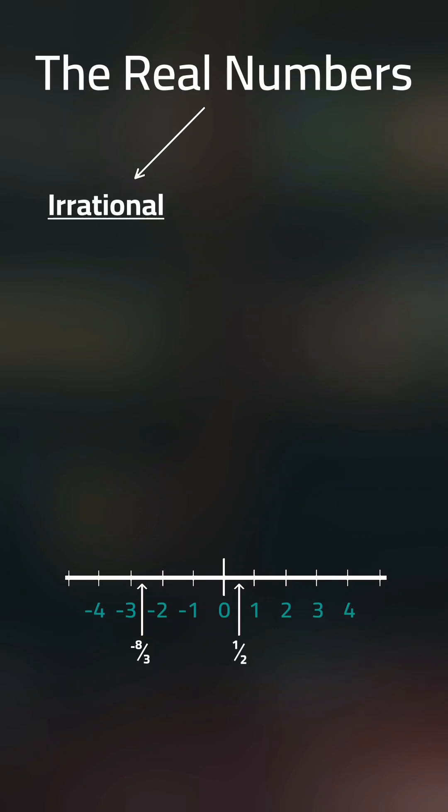Irrational numbers cannot be expressed as a fraction of two integers. As a decimal, irrational numbers do not terminate, but keep going.